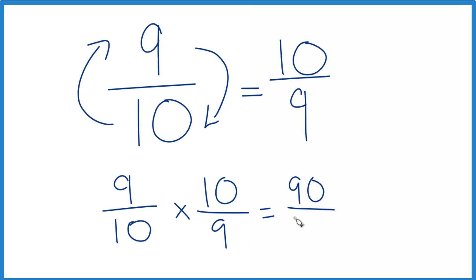And 10 times 9, that's 90. 90 divided by 90 equals 1. So we did this correctly. The reciprocal for 9 tenths is 10 ninths.